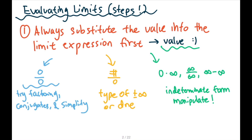In that case, we have to try to factor or use a conjugate — overall, we just have to simplify so we can get a value. Second case: number over zero means positive or negative infinity, or it does not exist. Third case: something like zero times infinity, infinity over infinity, or infinity minus infinity — that's the indeterminate form. To find the value, we just have to manipulate. We will go over examples about this.